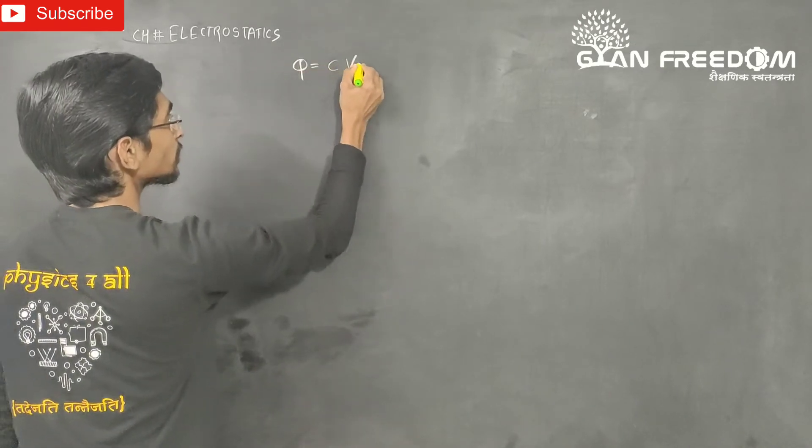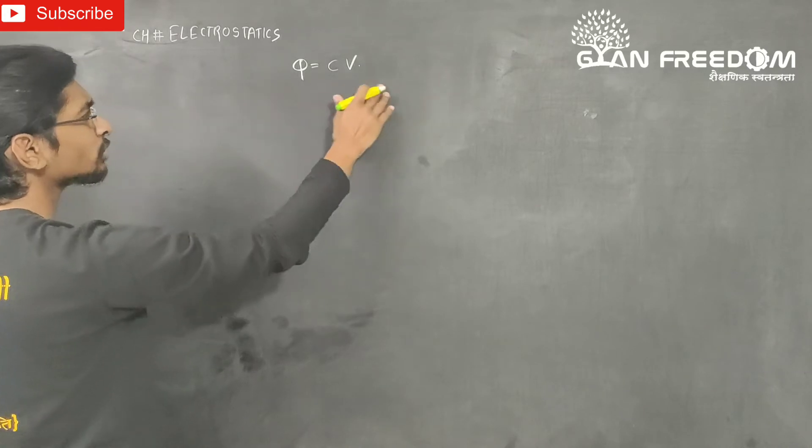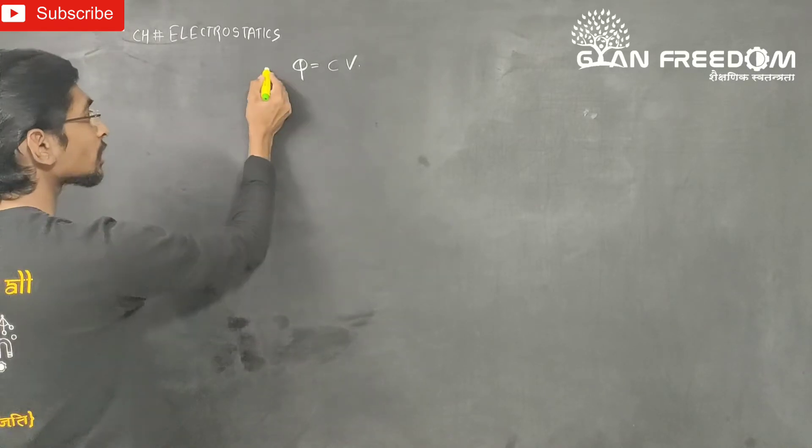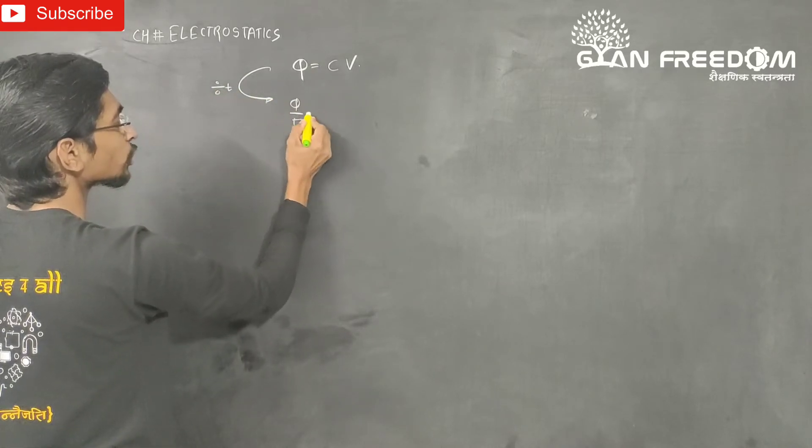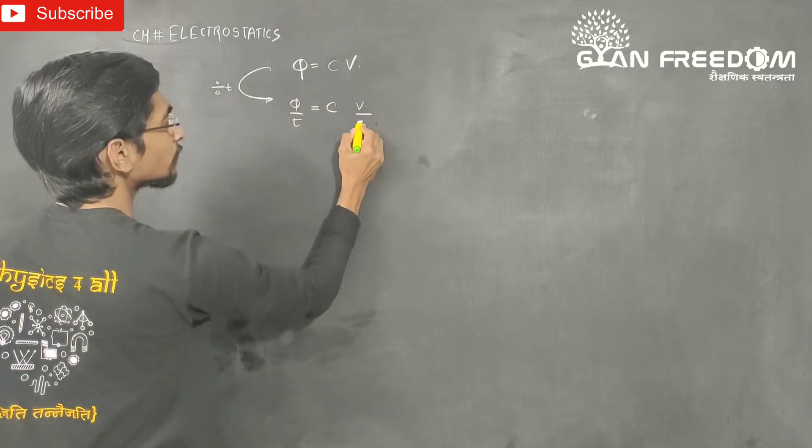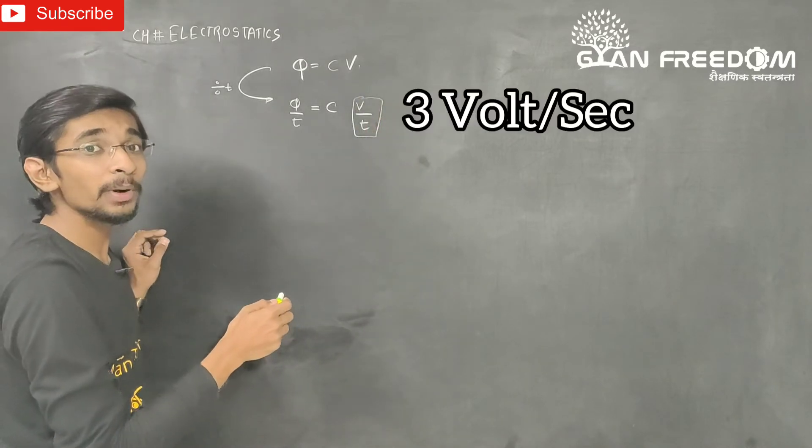Q is equal to CV. If you differentiate it, then you can divide it by T. dQ by dT is equal to C times dV by dT. This is 3 volts per second.